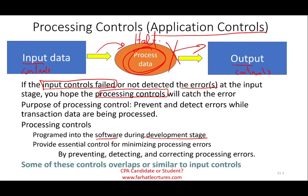Bear in mind that some of these processing controls we're going to discuss overlap with, or are similar to, input controls. Sometimes you may not have a control at the input level but have it inside the processing, because when the software was developed that technology didn't exist — now you could have that control at the input level. So you will see some controls with the same or similar naming. Next we're going to look at actual examples of processing controls.